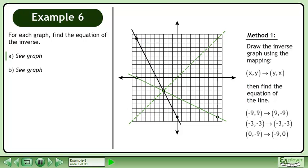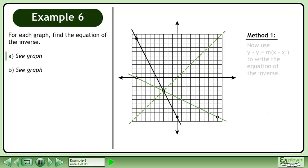Reflect the graph across the line y equals x. Now use a slope point form of a line, y minus y1 equals m times the quantity x minus x1, to write the equation of the inverse.